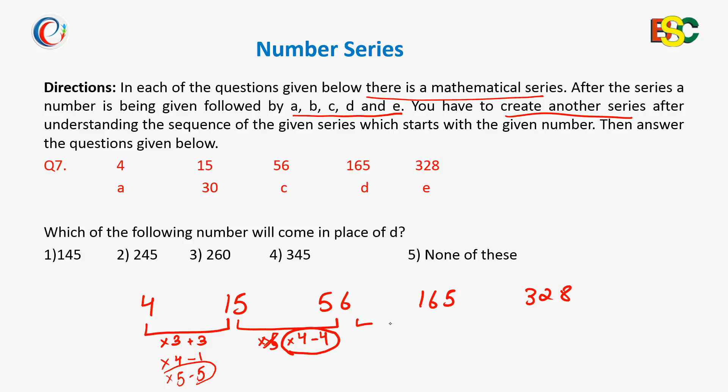So next must be into 3 minus 3 if we follow the same pattern. So 56 into 3 is 168 and 168 minus 3 is 165. So it is this pattern. Next would be into 2 minus 2, that is 165 into 2 is 330 and 330 minus 2 is 328. So following this pattern.